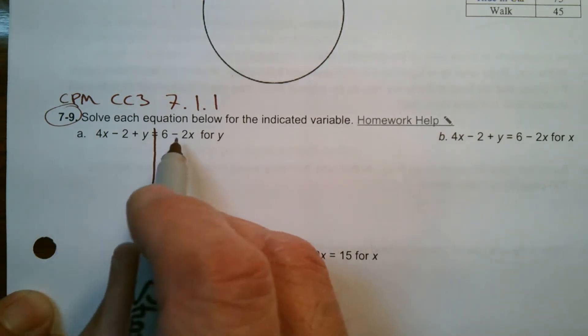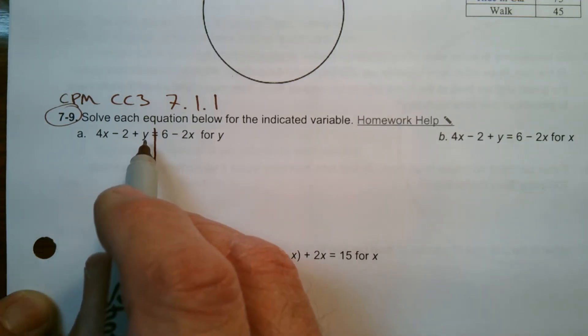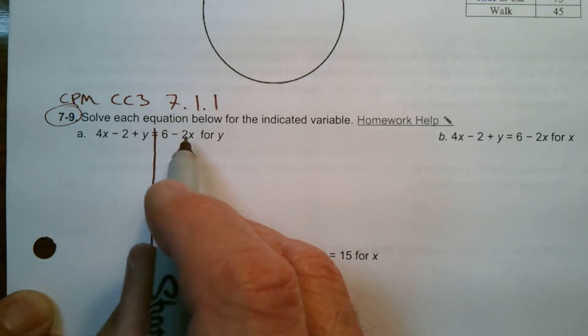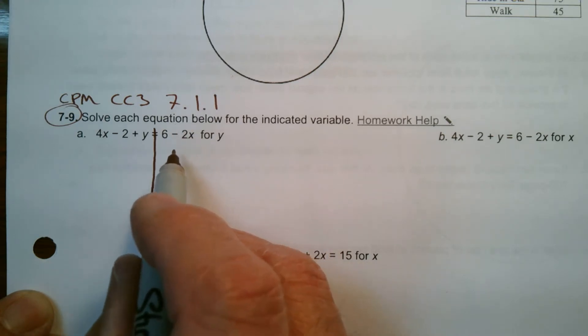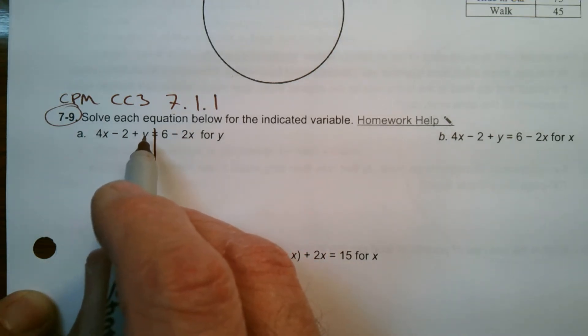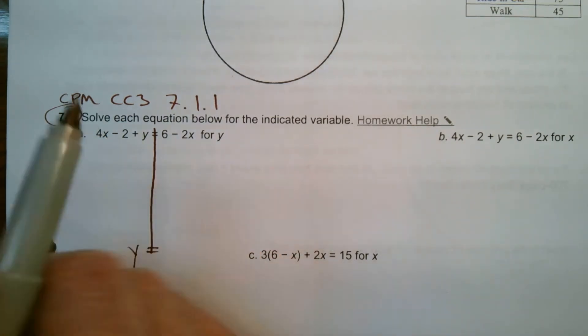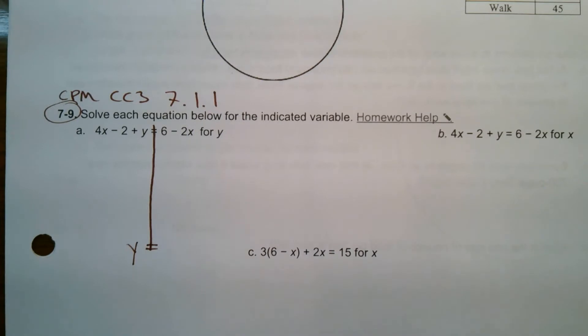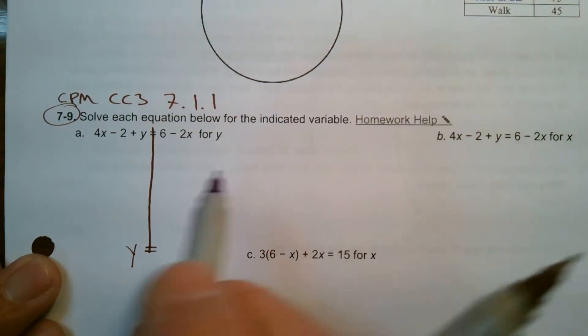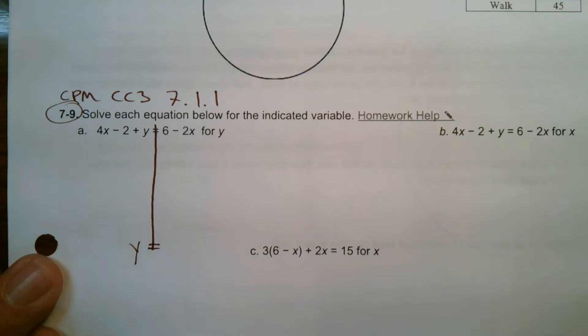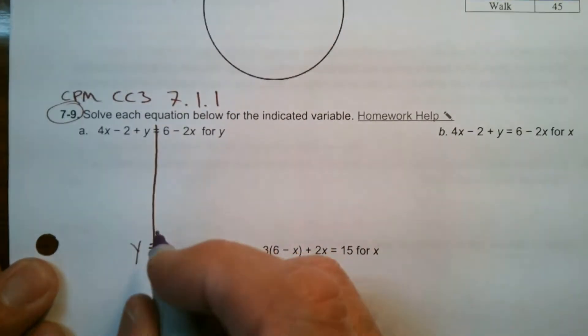So if I look, where is my y? I have 4x minus 2 plus y. There's a y here equals 6 minus 2x. There's no y on this side. So we're really looking to just get that y all by itself. So that means do some opposite inverse operations, create zeros, however you want to look at it, create some zeros to make sure that y is alone.